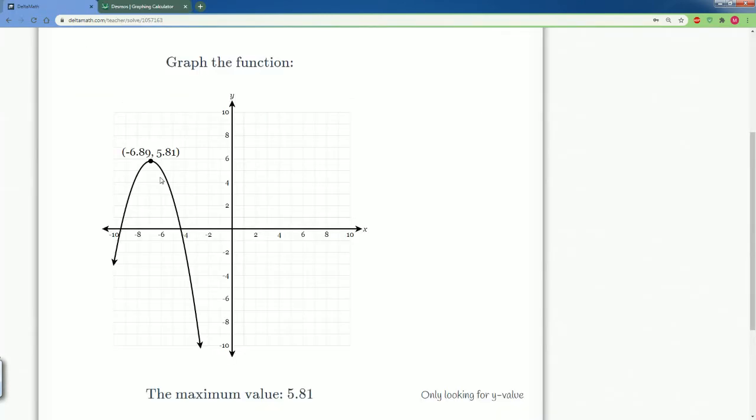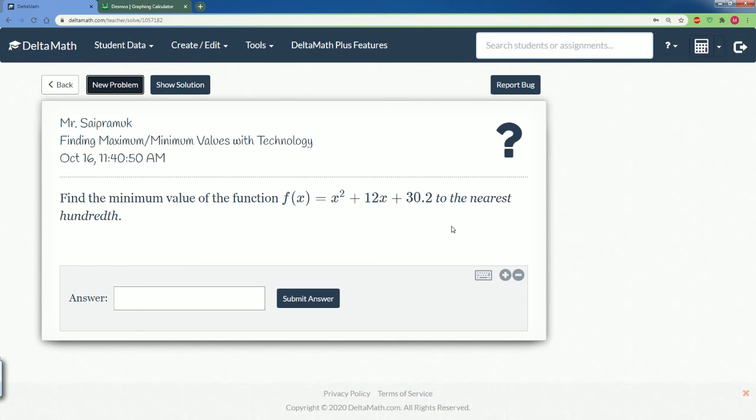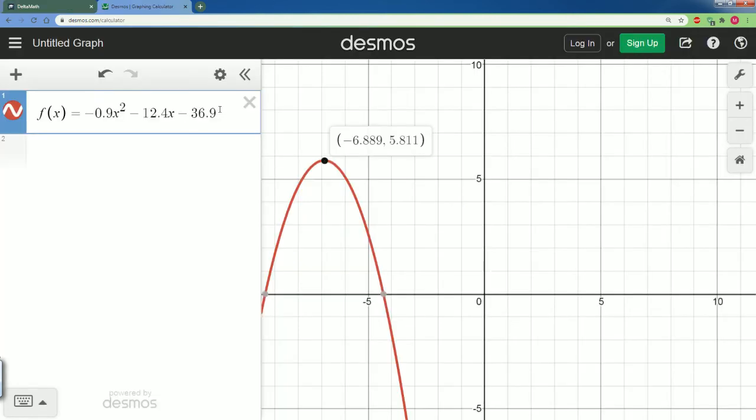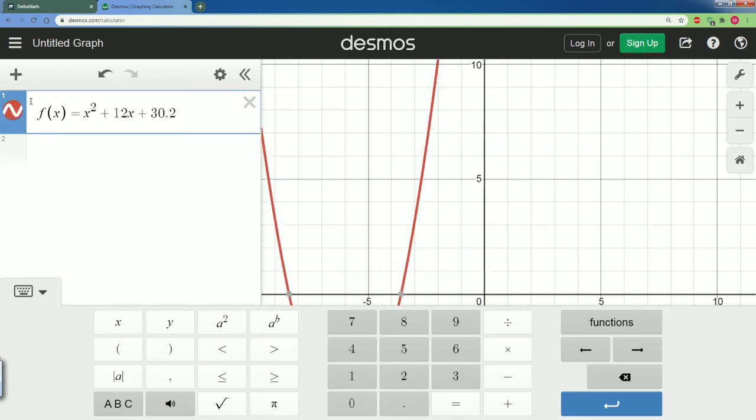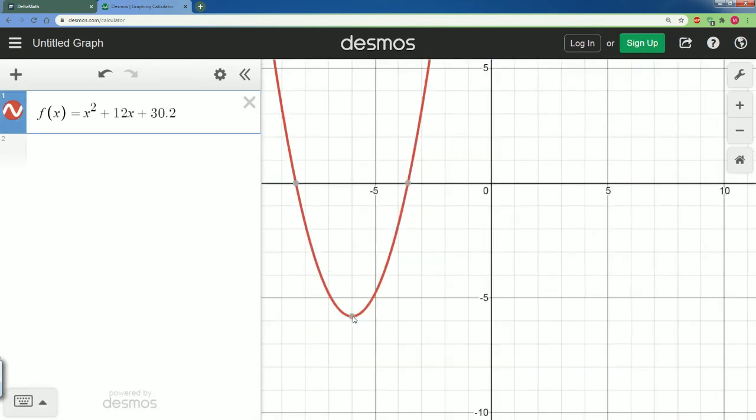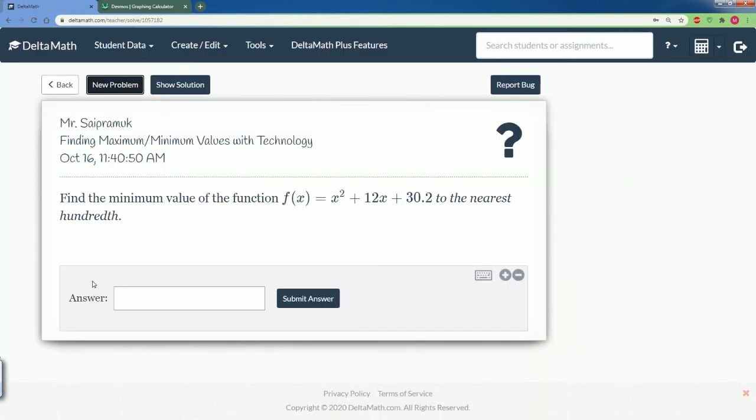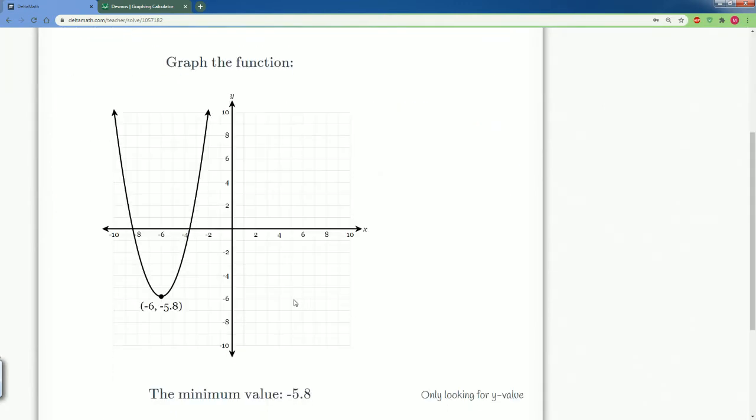Good, let's do that again. Now we enter this pretty function in our calculator: x squared plus 12x plus 30.2. Let's go here, let's type that in: x squared plus 12x plus 30.2. Let's zoom out to see it. So the point is at negative 6 comma negative 5.8, so the minimum, it's just a y value, so it's negative 5.8. So here we can just write negative 5.8 and hit submit. That is a minimum and we did it correctly.